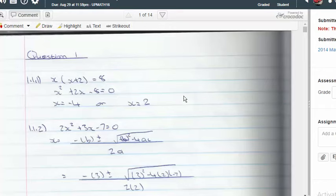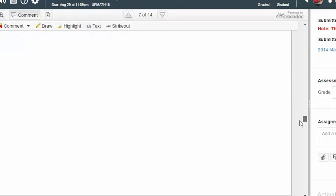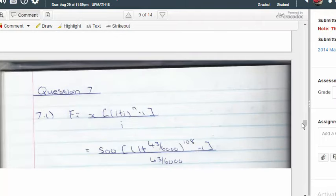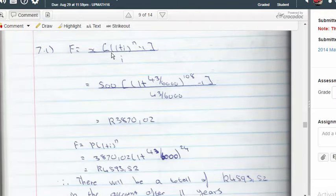So what did the student do? Where is it? There we go. Okay, there's our future value interest formula.